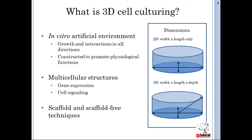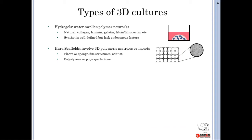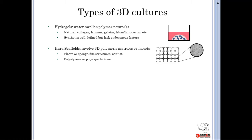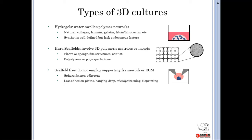3D cell cultures come in two basic varieties: scaffold-dependent and scaffold-independent. Scaffold-dependent cultures rely on natural or synthetic matrices to form the ECM. Examples of scaffolds include hydrogels and hard scaffolds. Hydrogels can be natural or synthetic in origin and are polymer networks swollen with water. They are popular among researchers studying cells from tissues that serve barrier functions or have bilayer structures. Hard scaffolds include polymeric structures prefabricated by means such as 3D printing to create interstices in which cells can grow.